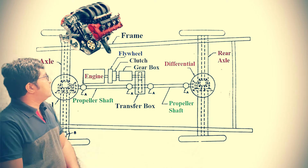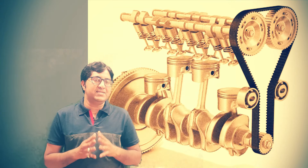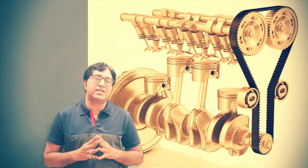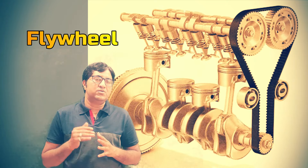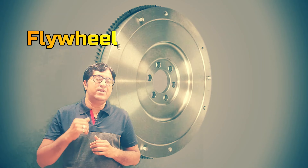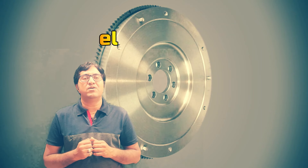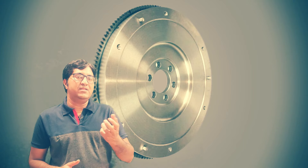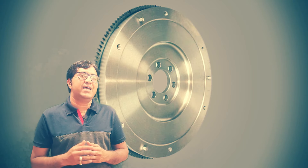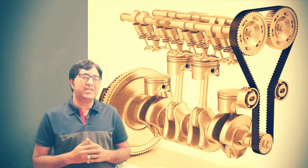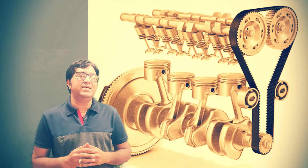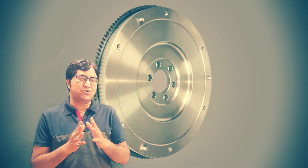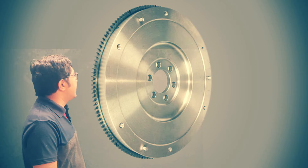This engine is connected with the flywheel. The flywheel is an energy storage device — it also controls fluctuation. It is used to store energy during the power stroke in an IC engine. Whatever extra energy is produced by the engine is stored in the flywheel, and it is utilized in the other strokes — the compression stroke as well as the exhaust stroke. This is the function of the flywheel.